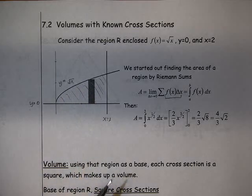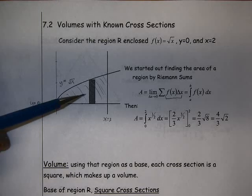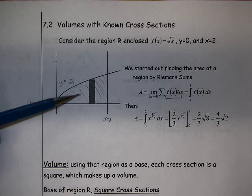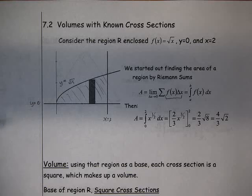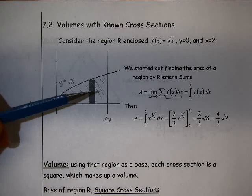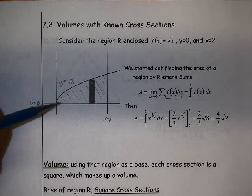That's the review, just to refresh your memory. Now in chapter 7, we're going to extend this idea of adding up lots and lots of these shapes to get an area, and extend that into three dimensions. We're going to take lots of three-dimensional slices and add those up to get a volume.